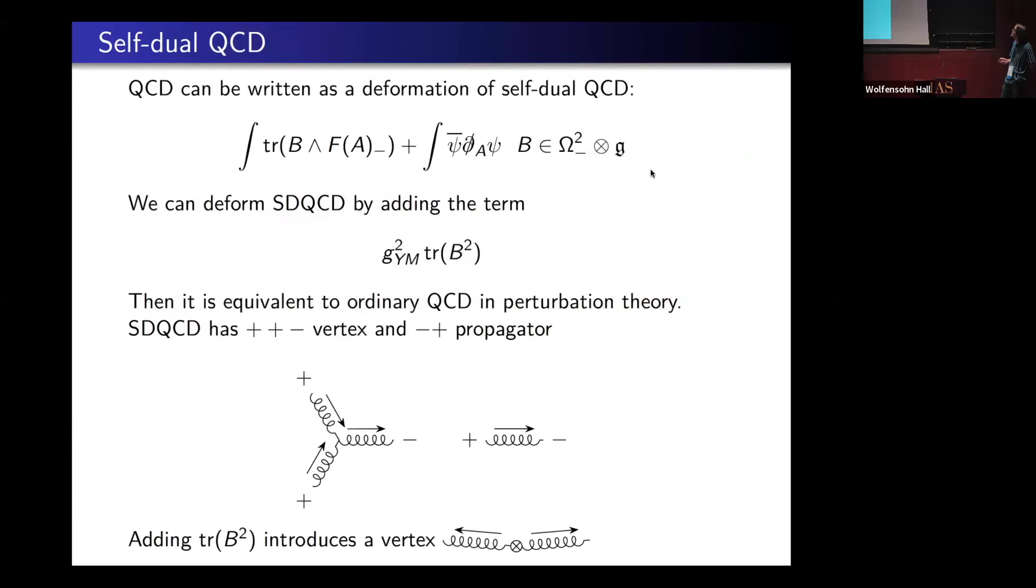The starting point of our analysis is something familiar to many people: we can view QCD as a deformation of self-dual QCD. This has been studied since at least the nineties. Self-dual QCD has this Lagrangian. I introduce a Lagrange multiplier field B, whose equations of motion enforce the self-duality equations for the field strength. If I deform this by adding trace B squared, then it's equivalent to ordinary QCD in perturbation theory.